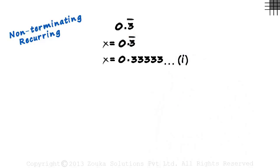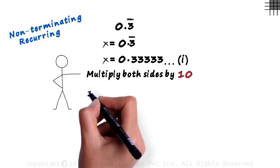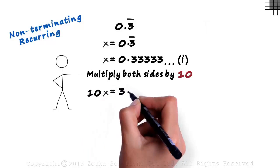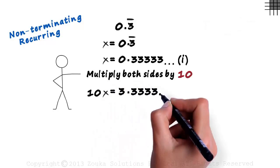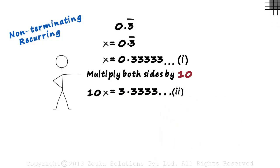There's only one way in which we can convert this into a fraction. It's by eliminating the recurring decimal, eliminating this 3333 and so on. How do we eliminate it? Here's the most important step. We multiply both sides of this equation by 10. That gives us 10x equals 3.3333 and so on. Let this be our second equation.